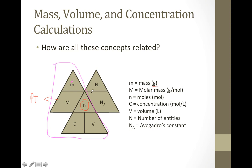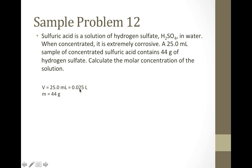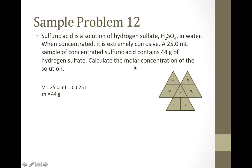Let's try a sample problem. Sulfuric acid is a solution of hydrogen sulfate, H2SO4, and water. When concentrated, it is extremely corrosive. A 25 mL sample of concentrated sulfuric acid contains 44 grams of hydrogen sulfate; we're asked to calculate the molar concentration. Our volume is 25.0 milliliters, which we need to convert to liters by dividing by 1,000. Our mass of solute is 44 grams, and we're asked to solve for molar concentration.